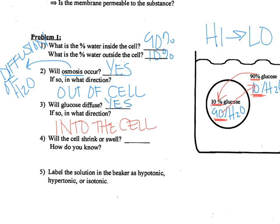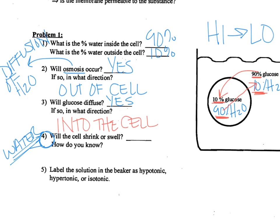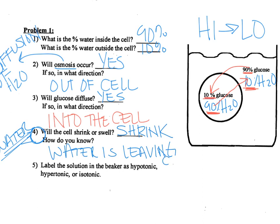Number four says, will the cell shrink or swell? You need to make sure you're looking at what water is doing — which way is water moving? That's going to help you answer this question. We drew the arrows earlier, so we know that water is moving out of the cell. Because of that, this is going to make the cell shrink. Water is leaving the cell.